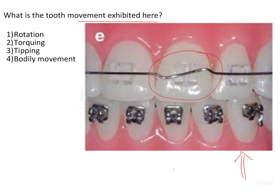These bends are no longer really used because most of the prescription is already in the bracket, which is why we have the straight wire appliance. The modern MBT prescription already has the tip and torque values incorporated into the bracket. However, some minor wire bending is still given in order to bring about minor tooth position correction, especially during the finishing stages where you don't want to reposition the brackets. Individual tooth position corrections can still be done by giving bends in the wire.